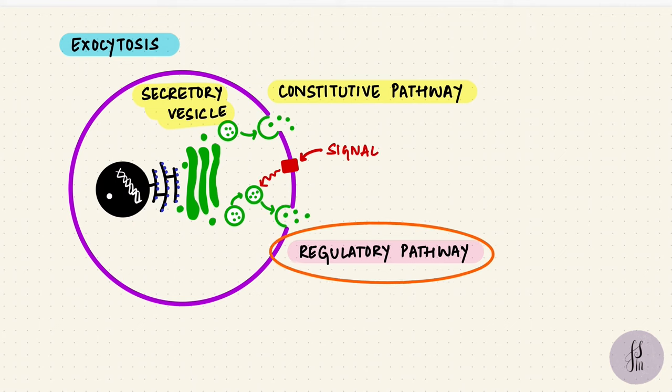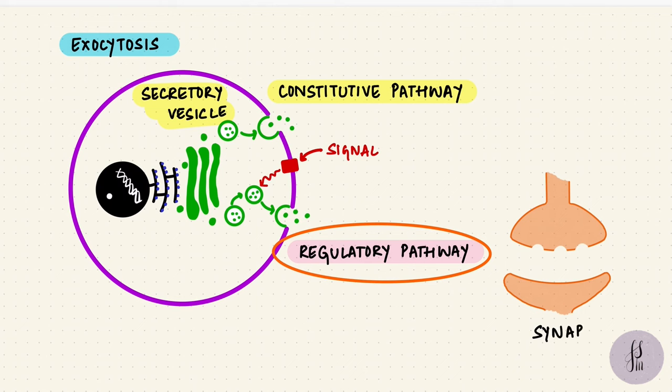An example of this is at the synapse, like the neuromuscular junction. The neurotransmitter is stored in vesicles and when the action potential arrives, calcium enters the cell and makes the vesicles fuse with the membrane.